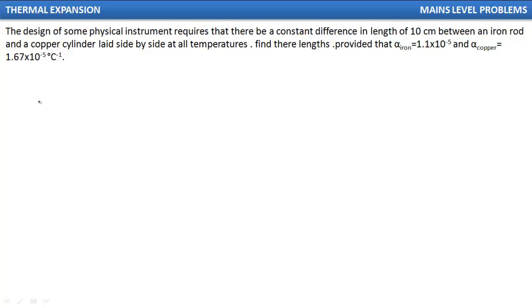So I am going to proceed to the solution. We have a condition given that the copper cylinder and iron rod have a distance of 10 cm for all temperatures. All temperatures is the most important point in this question.